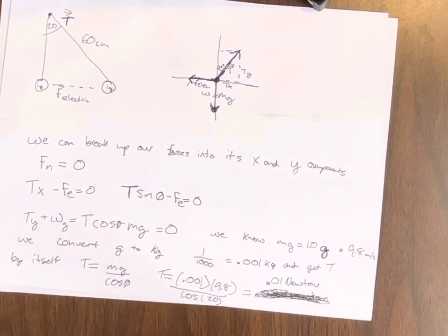And we know our mass times g, g being gravity, is 1.0 times 9.8 meters per second, 1.0 grams. And we convert grams to kilograms, and we know there's 1,000 grams in a kilogram.